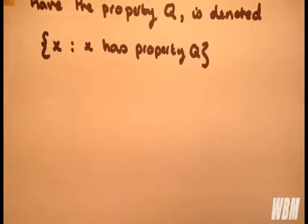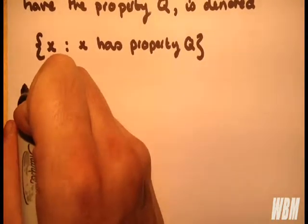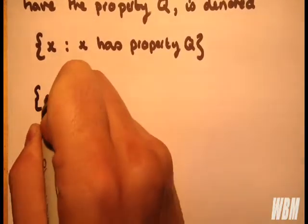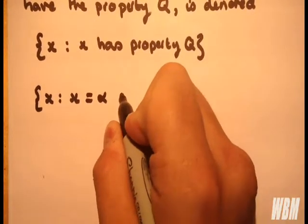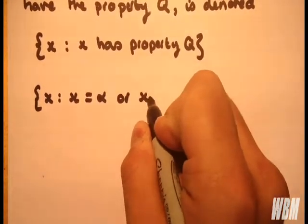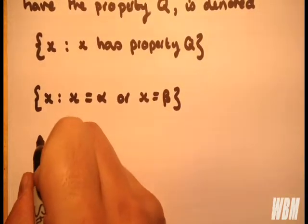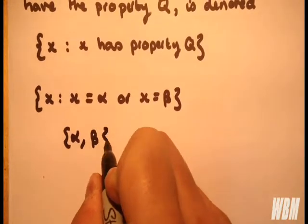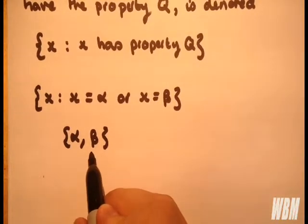We can also simply list elements if it's easier to do that. For example, we have a set X such that X equals alpha or X equals beta. And we can write that as alpha, beta, and we're listing the elements of the set.